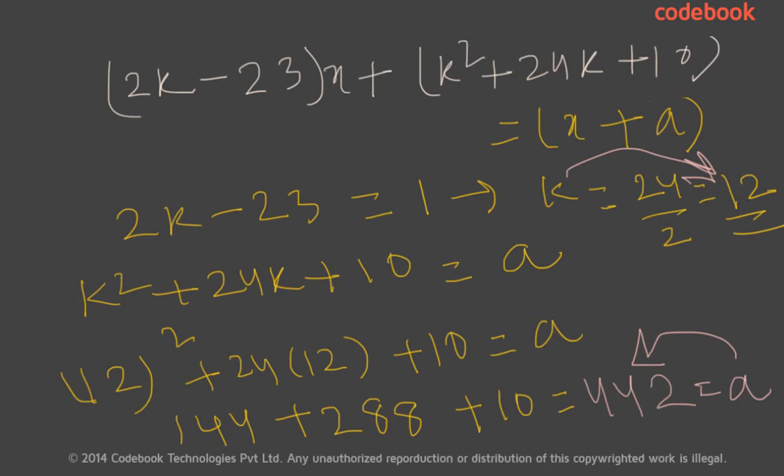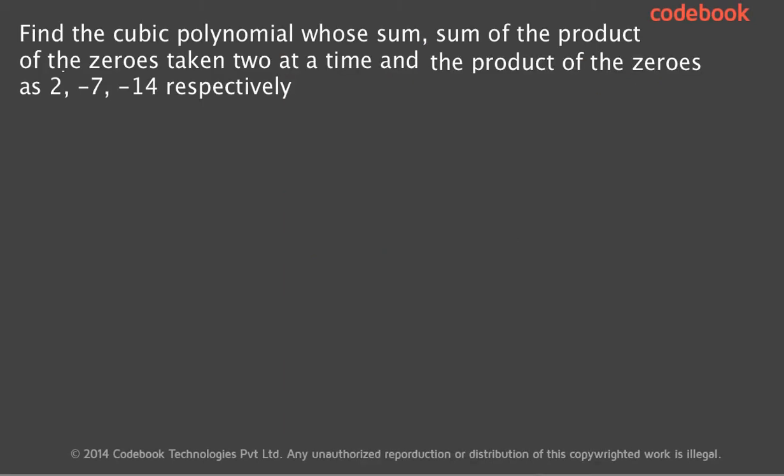So a is 442 and k is 12. In this way we have calculated the values of a and k by applying the principles of division of polynomials. Now let's work on another problem. We have been given the sum, sum of the product of the zeros taken two at a time, and the product of the zeros of a cubic polynomial are 2, minus 7, and minus 14 respectively. We have been asked to find the cubic polynomial.